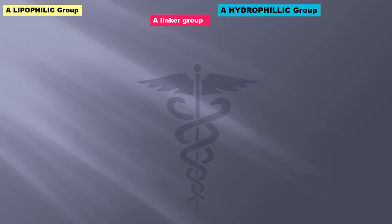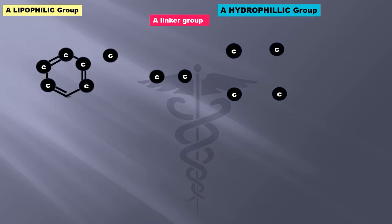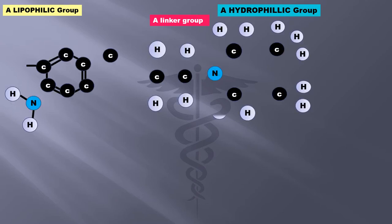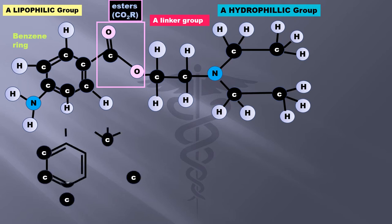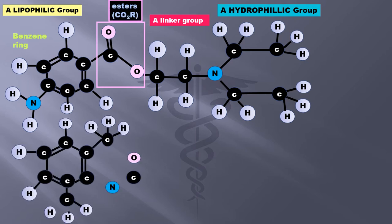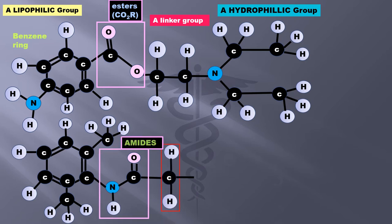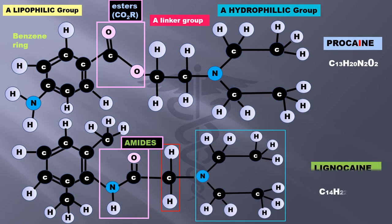Looking at the structures: the lipophilic group is the benzene ring, then the linker group — either ester or amide — and then the hydrophilic group. This is procaine and this is lignocaine. In both, the terminal amines are tertiary with a nitrogen atom directly bonded to three carbons.